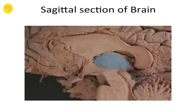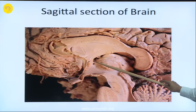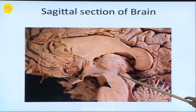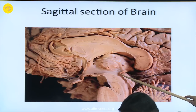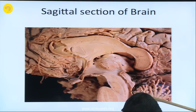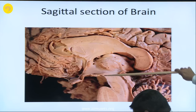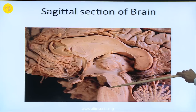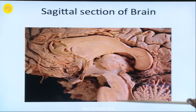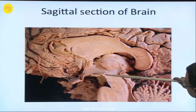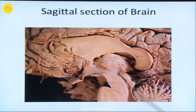Just below it you can see the thalamus — the anterior end of the thalamus and the posterior end of the thalamus. Here is the interventricular foramen and you can see the hypothalamic sulcus leading towards the cerebral aqueduct. This part is the midbrain; below this is the pons, and you can see the two colliculi.